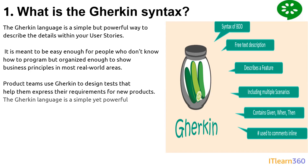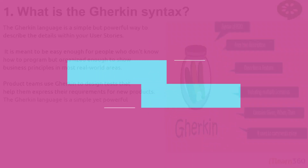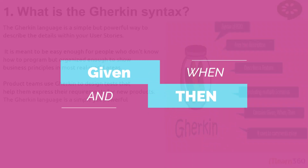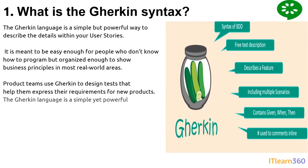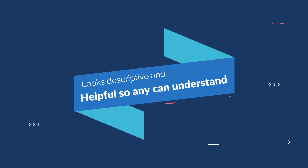Keywords like Given, When, and Then are mostly used while writing the Gherkin syntax. To comment a line in Gherkin we use the hashtag symbol. Gherkin is designed to test and express requirements for new products. Using this Gherkin syntax and all these features, we write test cases in a way that looks descriptive and helpful for anyone to understand.